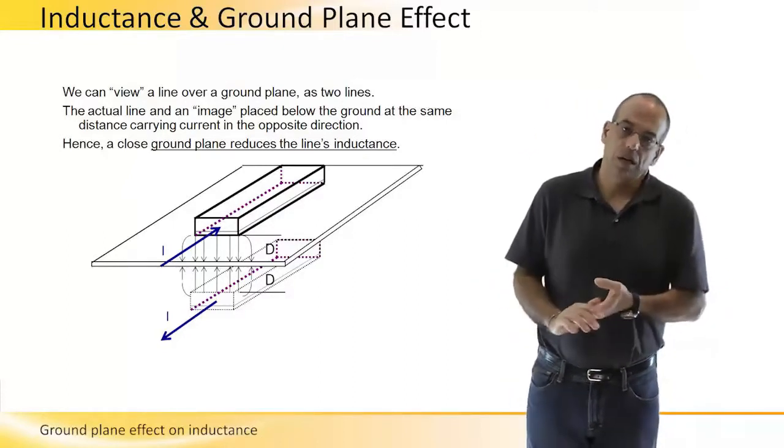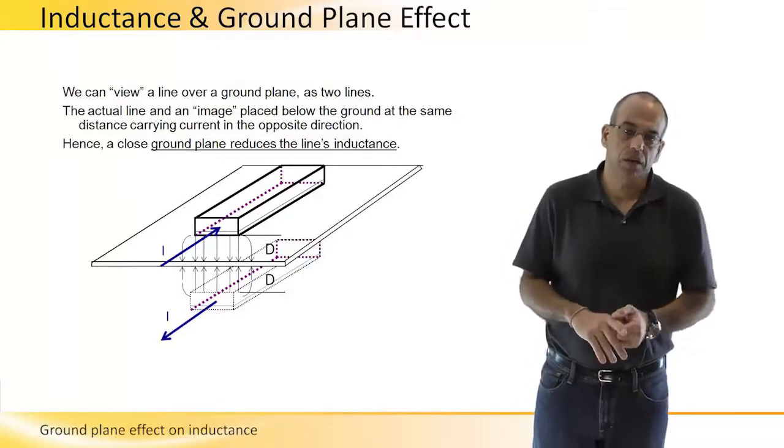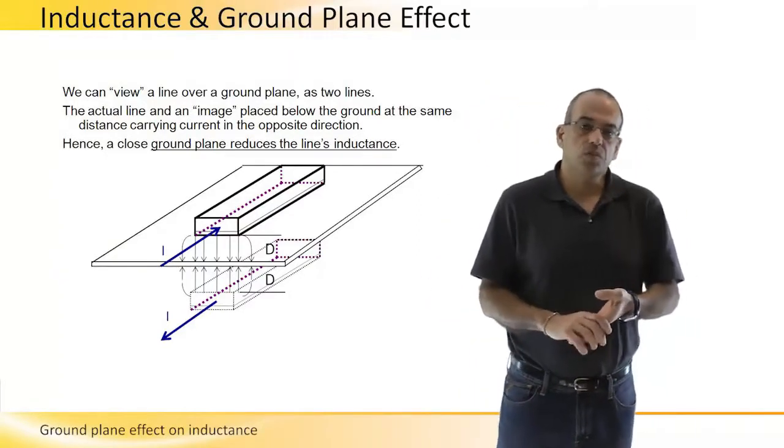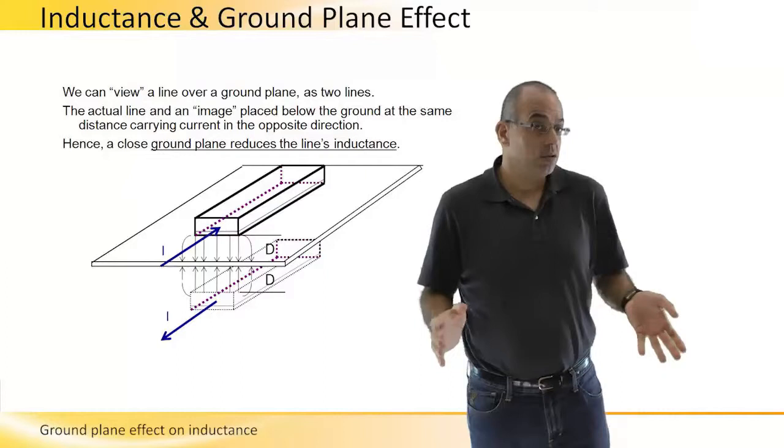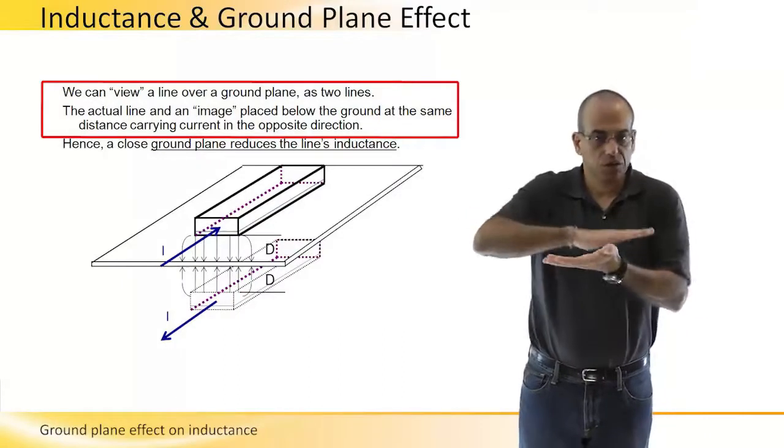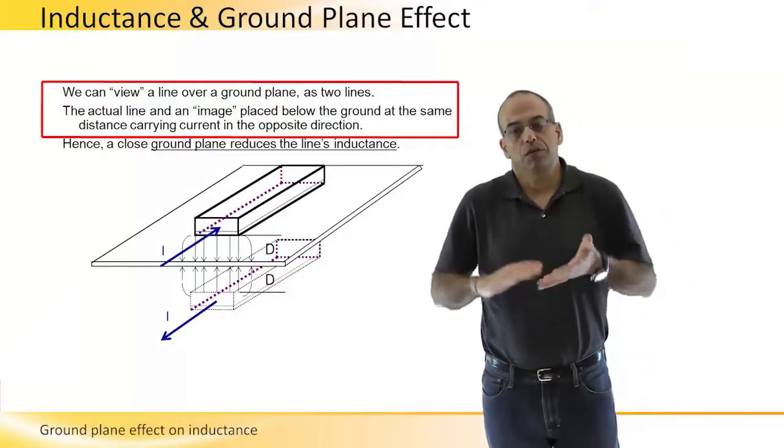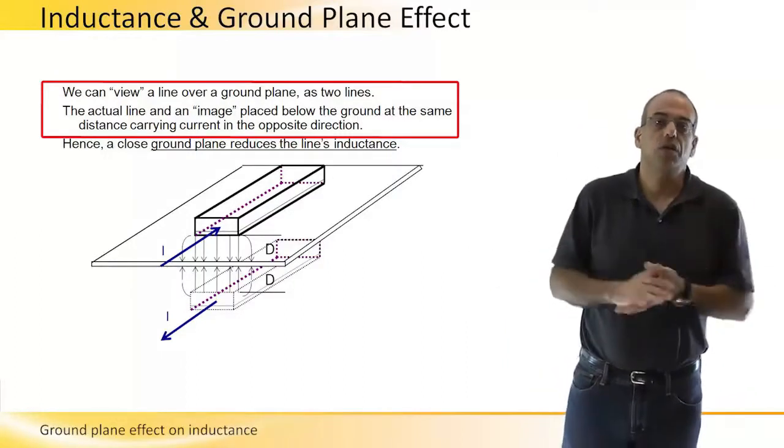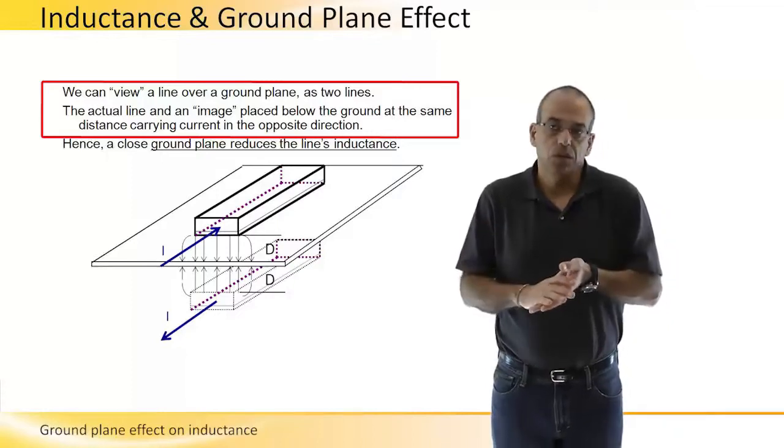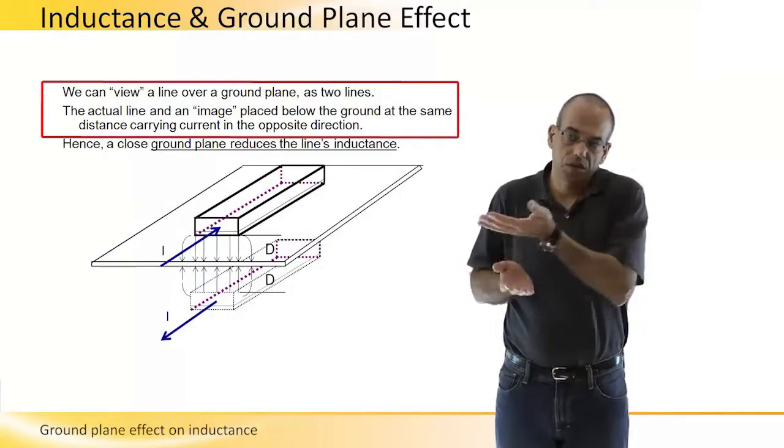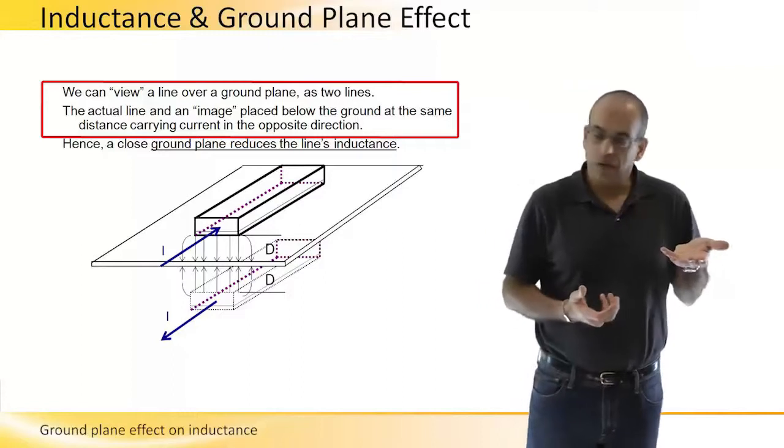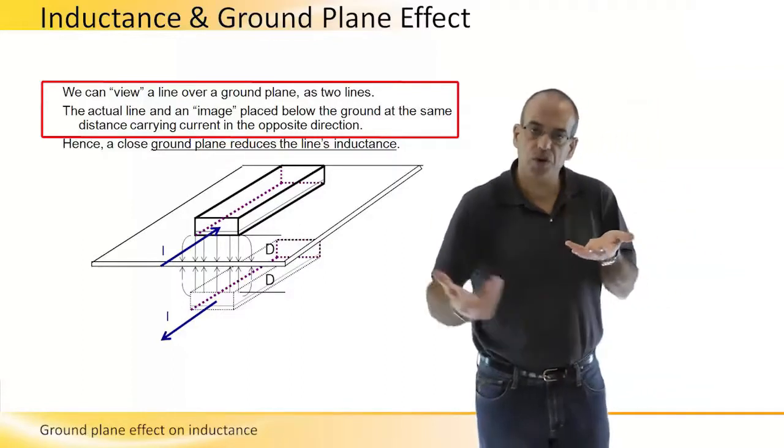In order to simplify the analysis, we can make a similar problem and assume - and it's a good assumption - that if we have one line laid out on top of a ground, the electric field of this problem would be identical or very similar to a problem where this ground plane is removed and we introduce another segment or another strip at the same distance behind this ground plane.